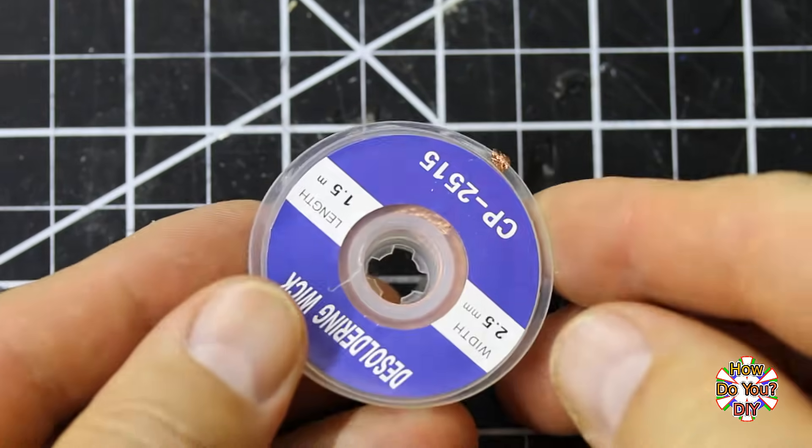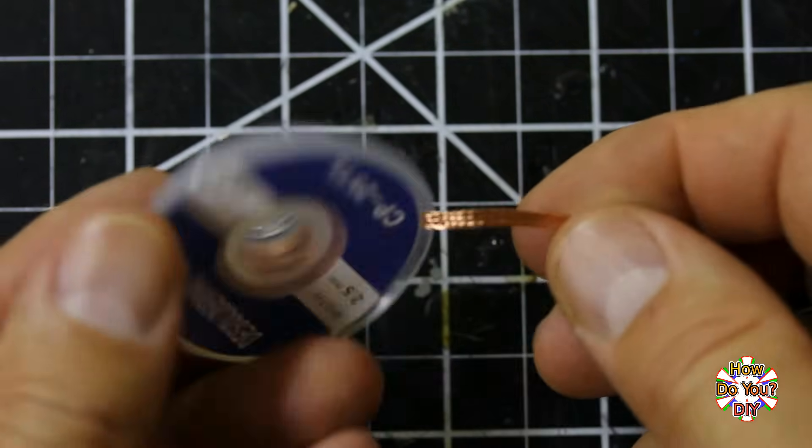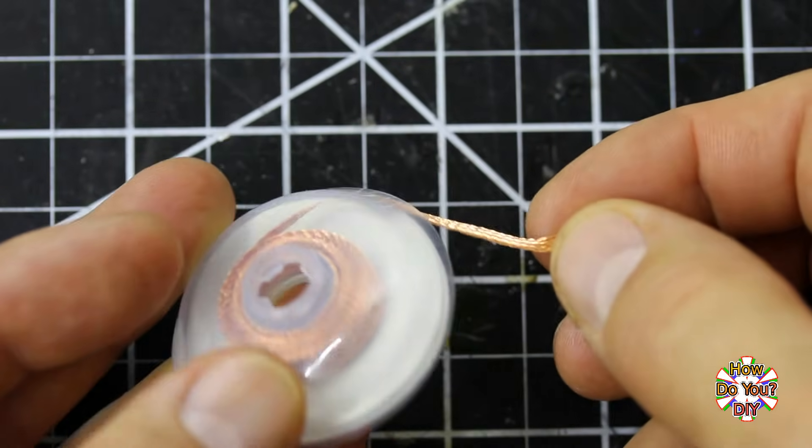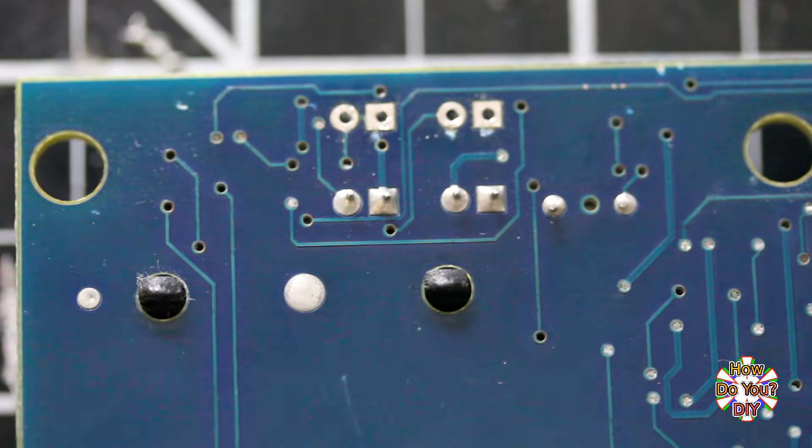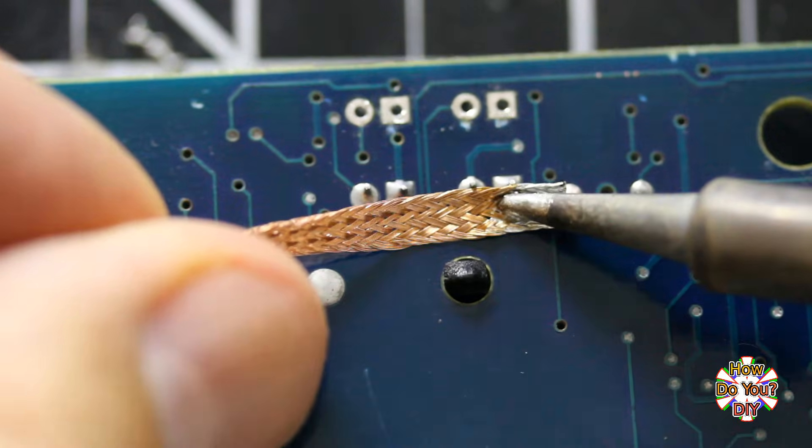For the first method of removing solder from the parts, I'll show you how to use desoldering wick. Sometimes it's also called solder wick, solder braid, or desoldering braid. It's basically just a braid of thin copper wires.